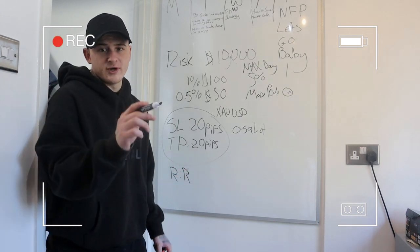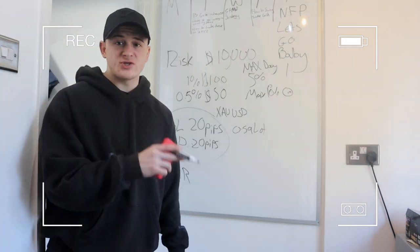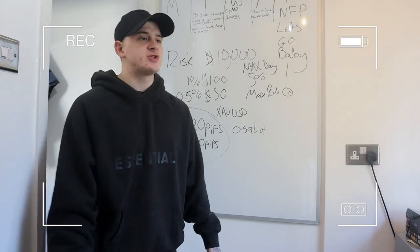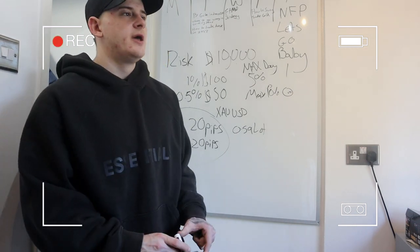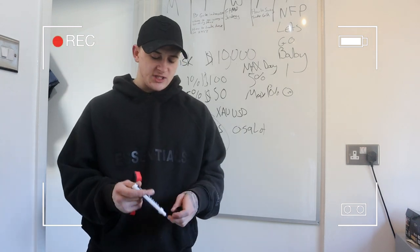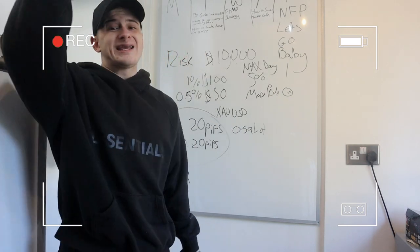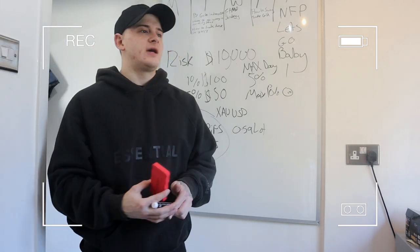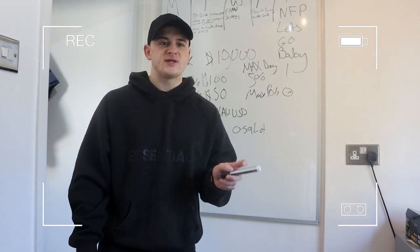With a 20-pip stop loss and 20-pip take profit, this is called R:R — risk to reward. As a trader personally, I try not to send too many trades. I do my market direction analysis, see where gold has been going, identify key levels where it could range to and from, and then get my mark-ups.